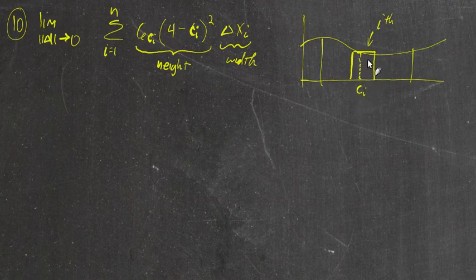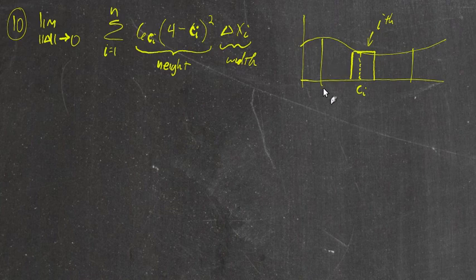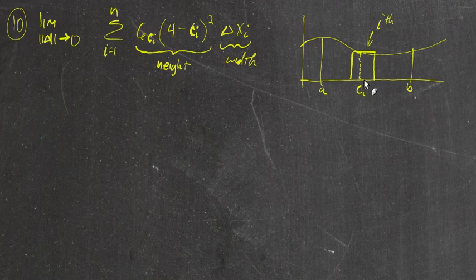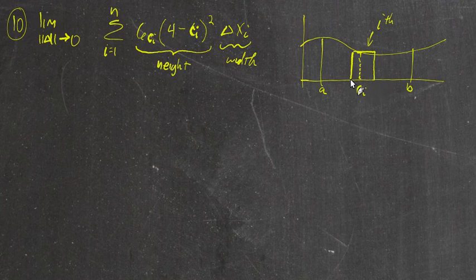As these rectangles get really small, as we let an infinite number of them be packed between a and b, it won't matter which choice of c_i we make. The rectangle becomes so narrow that c_i is going to be very close to both the left and right side — there's not going to be a lot of room in there. So c_i is just some point on that sub-interval.